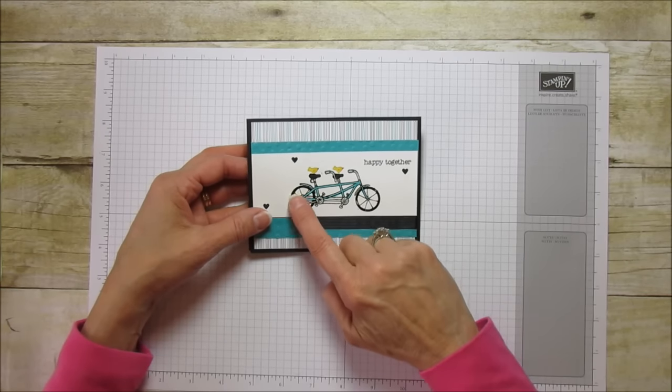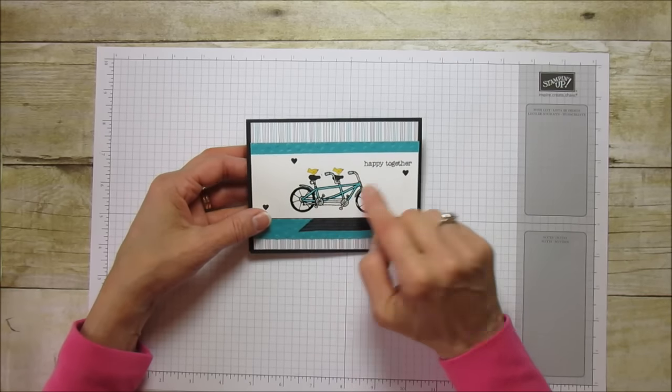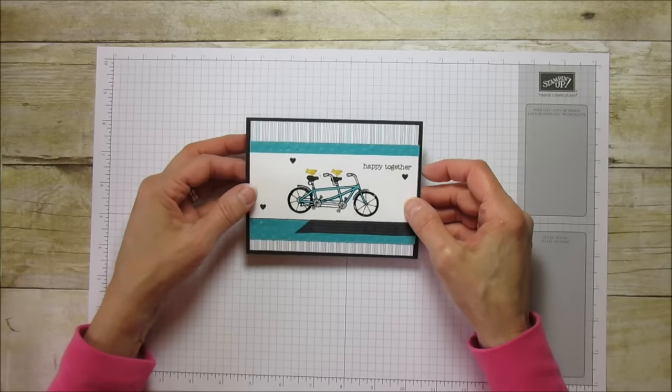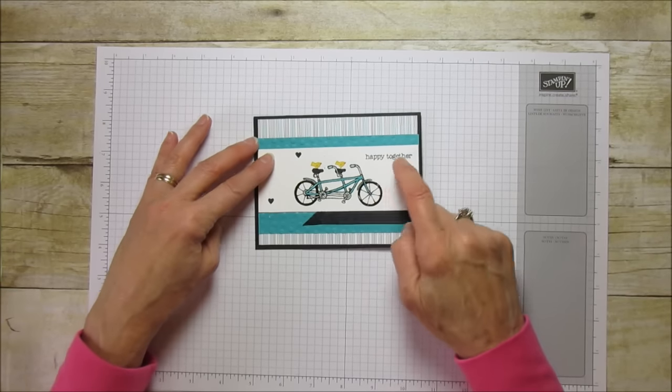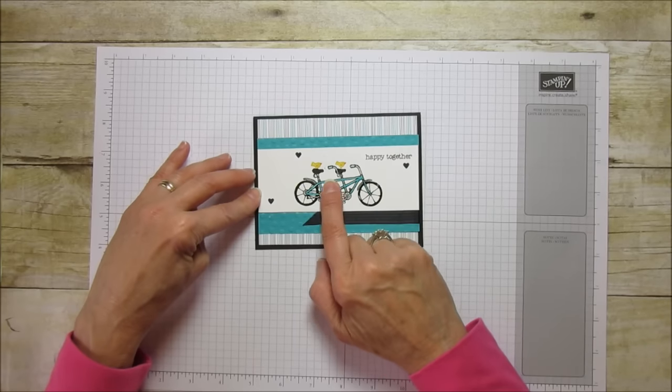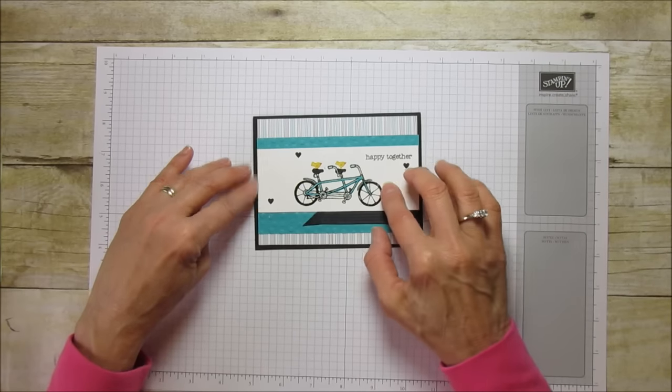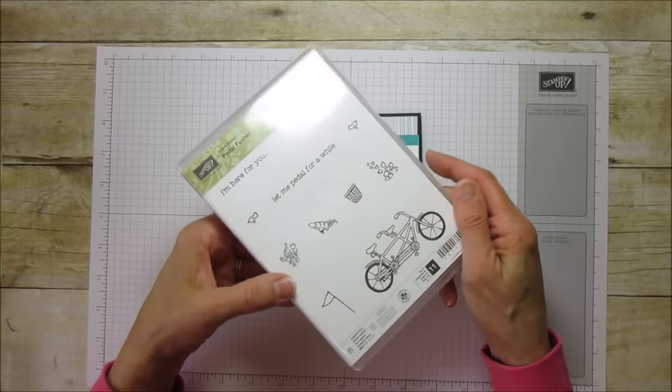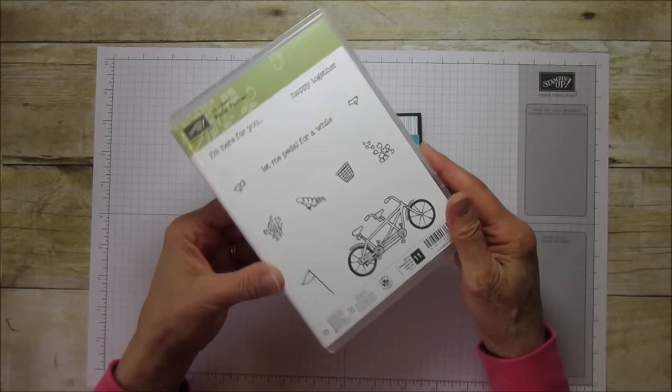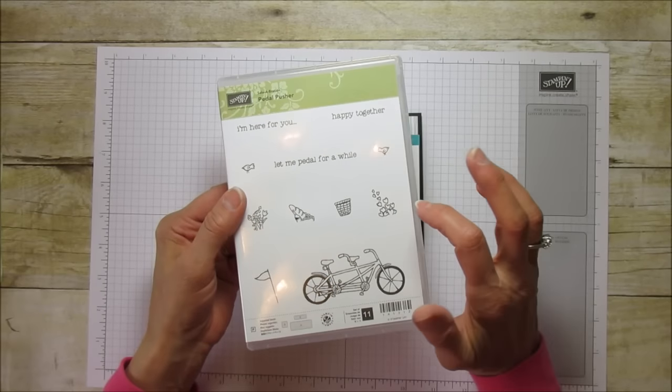We're going to use embossing powder to create this bike. I love this stamp set. It reminds me of when I was younger - I had a friend that had a bicycle built for two. This stamp set is called Pedal Pusher and it's super cute.